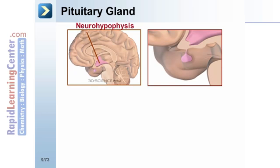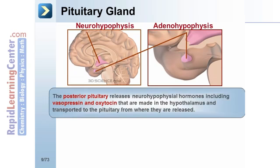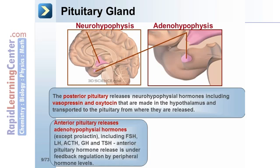The pituitary gland can be divided into the posterior and anterior segments, each of which carries out its own function. The posterior pituitary releases neurohypophysial hormones, including vasopressin and oxytocin, that are made in the hypothalamus and transported to the pituitary from where they are released. With the exception of prolactin, the anterior pituitary releases adenohypophysial hormones, including FSH, LH, ACTH, GH, and TSH. The function of the anterior pituitary is under regulation by the hypothalamus, and anterior pituitary hormone release is under feedback regulation by peripheral hormone levels.